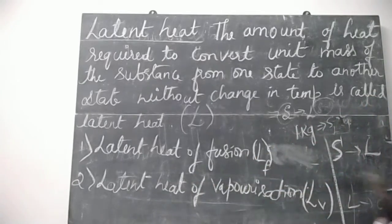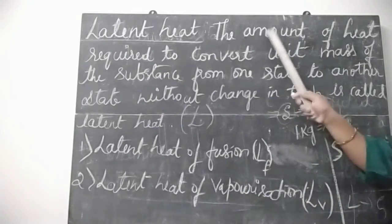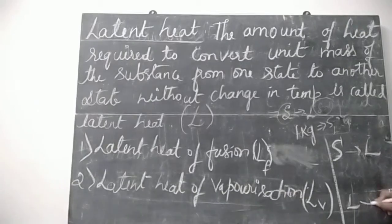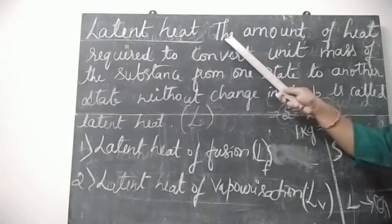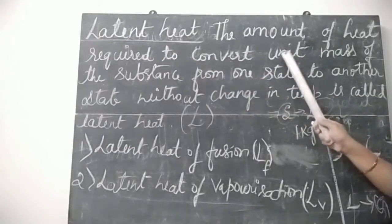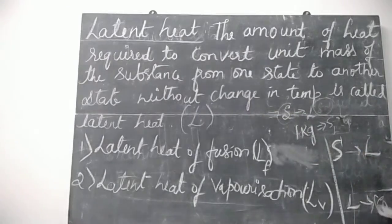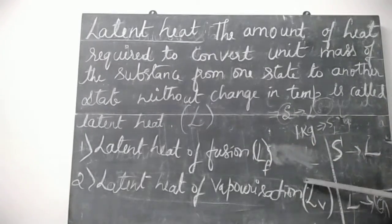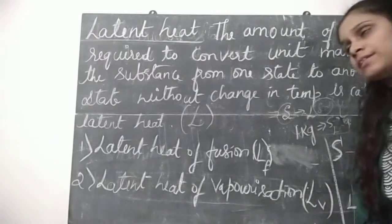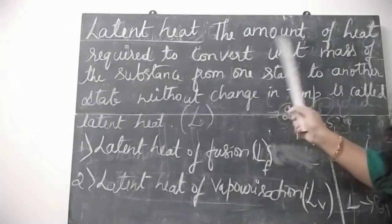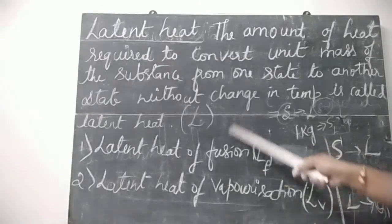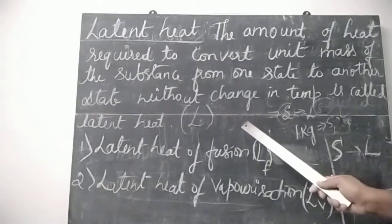Latent heat of vaporization is the amount of heat required to convert unit mass of the substance from liquid state to gaseous state without change in temperature. That is called latent heat of vaporization. So latent heat is denoted by capital L, and there are two types: latent heat of fusion and latent heat of vaporization.